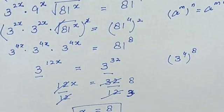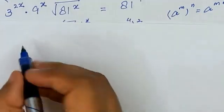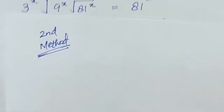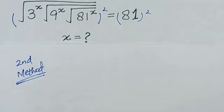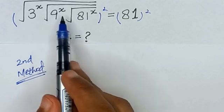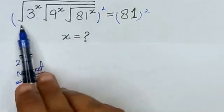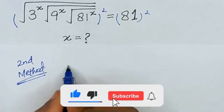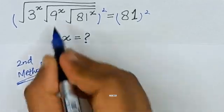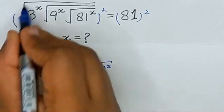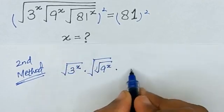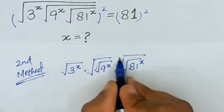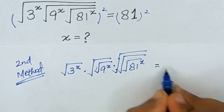Now I will solve this question with another method. The second method starts with the given equation: 3 raised to the power x, times the square root of 9^x, under the square root of 81 raised to the power x, is equal to 81. I can rewrite it showing each nested square root explicitly: square root of 3^x, square root of 9^x, and square root of 81 raised to the power x, all nested under one square root, equal to 81.